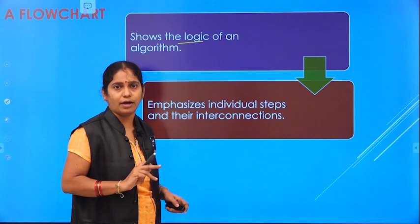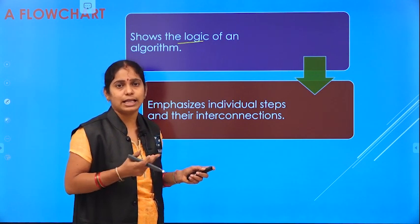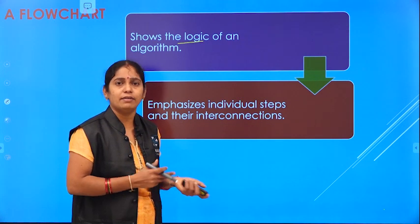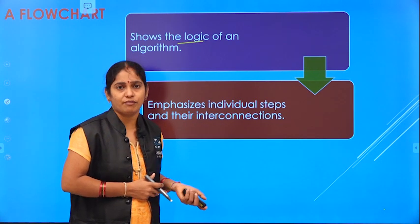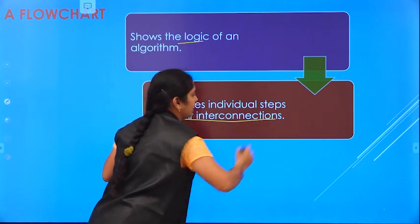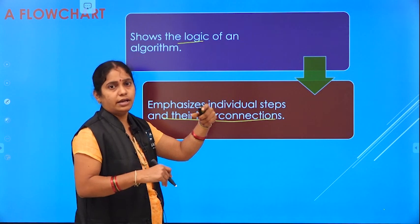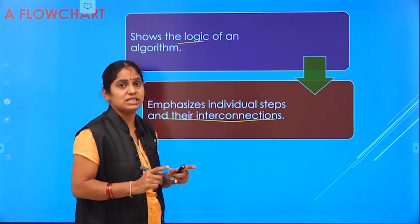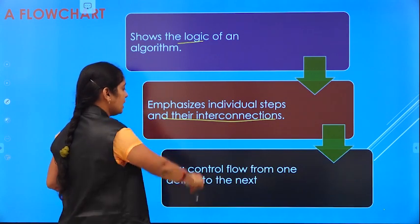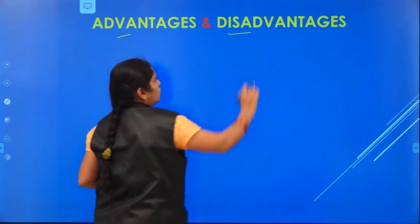The connection between one step and another is specified clearly by the flowchart. Flowcharts are very easy to understand compared to algorithms, because an algorithm is in sentence form whereas a flowchart represents it in a pictorial or symbolic form. The interconnection of steps — from first step to which step next, and from there to what — is specified clearly in the flowchart. That is one of the important features of the flowchart.